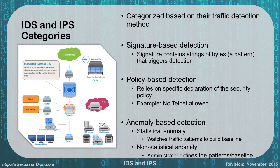IDS and IPS have different detection categories: signature-based, policy-based, and anomaly-based. Signatures are looking for a certain string of bytes — a certain pattern that triggers detection. For instance, if every person coming through is named John, we'd pull them out for extra screening; that's signature-based detection. Policy-based detection is based on a specific declaration of the security policy — for example, if we say no Telnet is allowed, we're going to block all traffic trying to use Telnet services or port 23, much like a firewall.